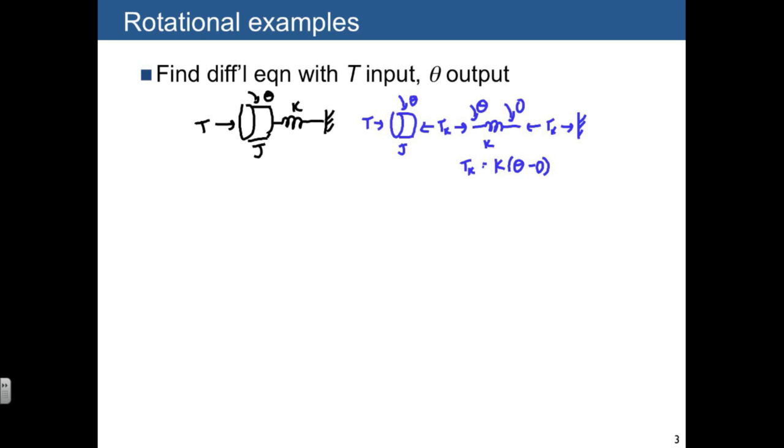And we need to sum the torques in the same direction that we've defined theta. And what we end up with is T minus Tk is equal to J times theta double dot.